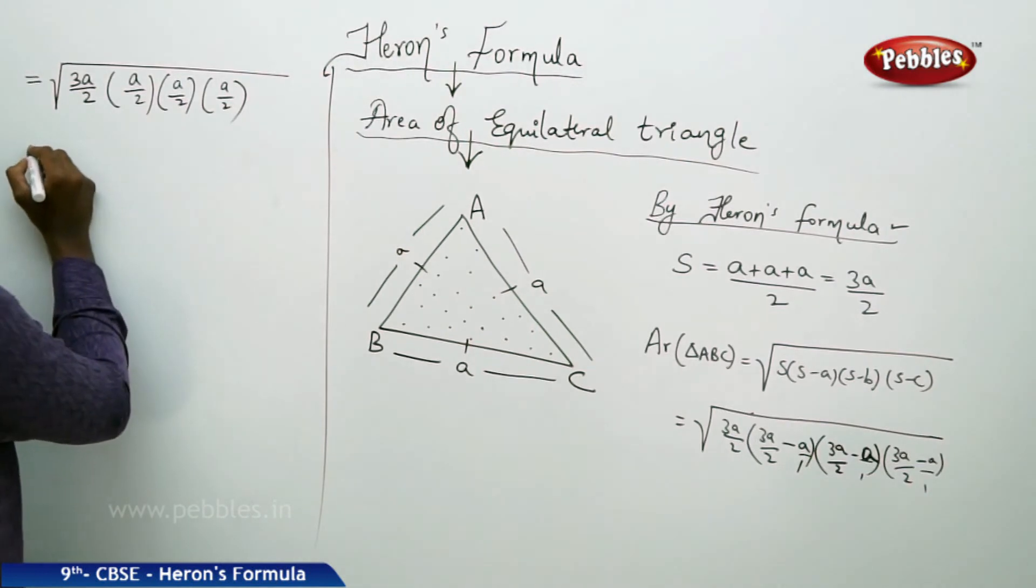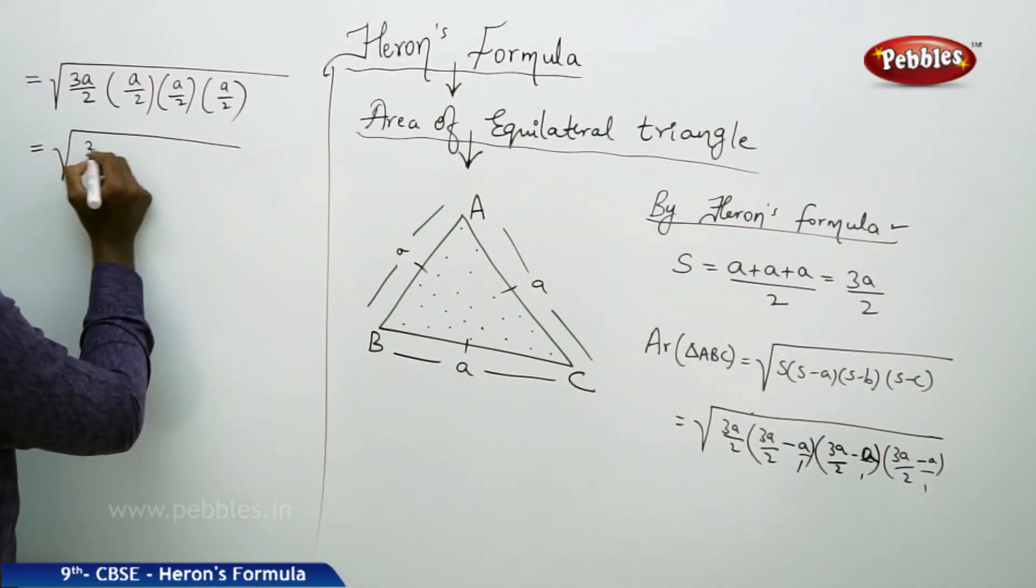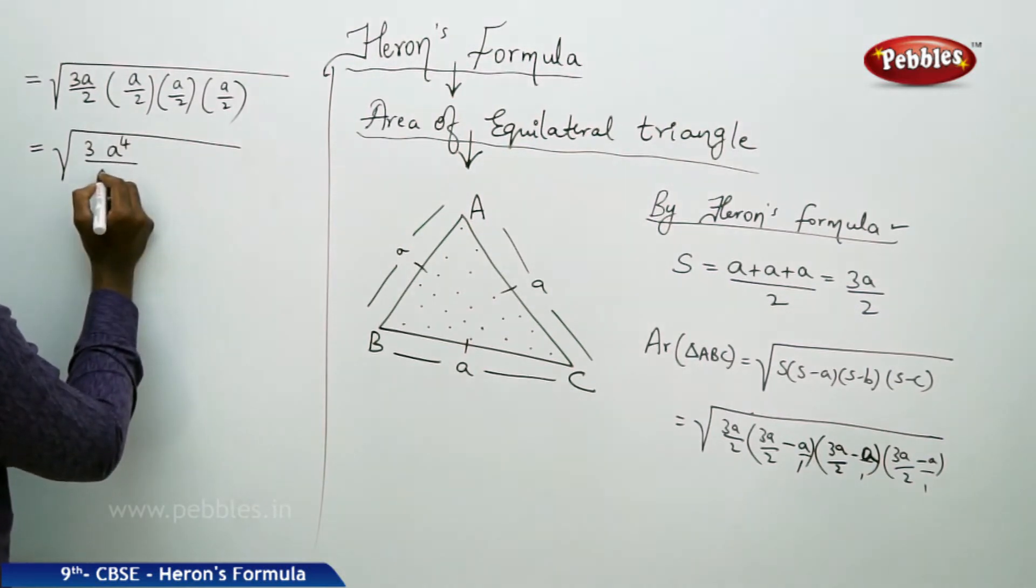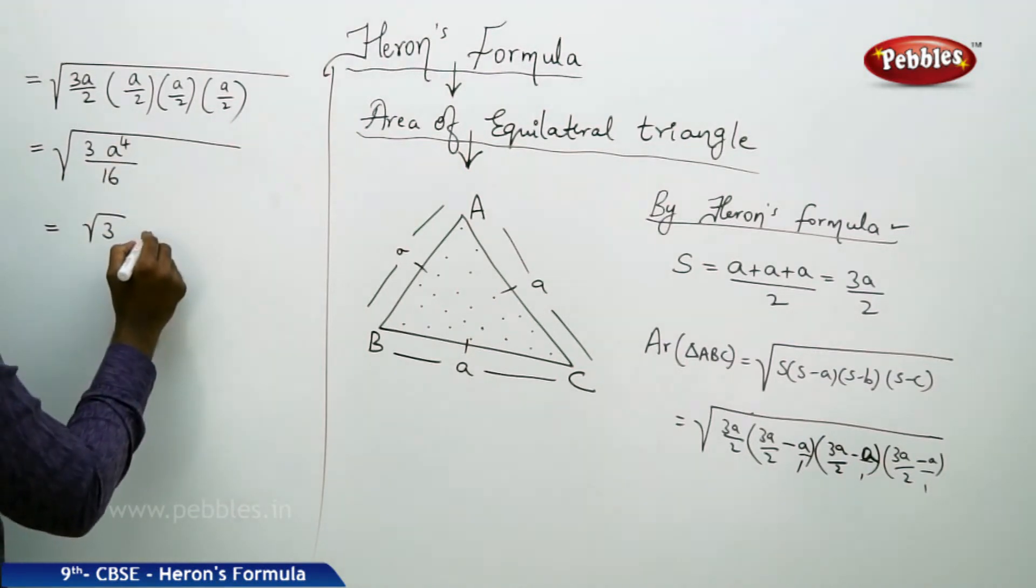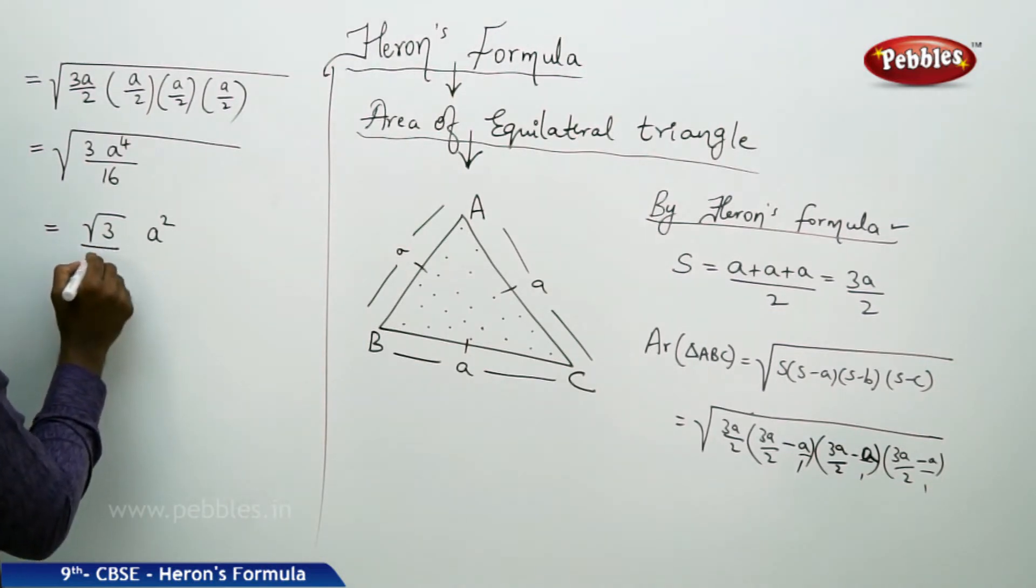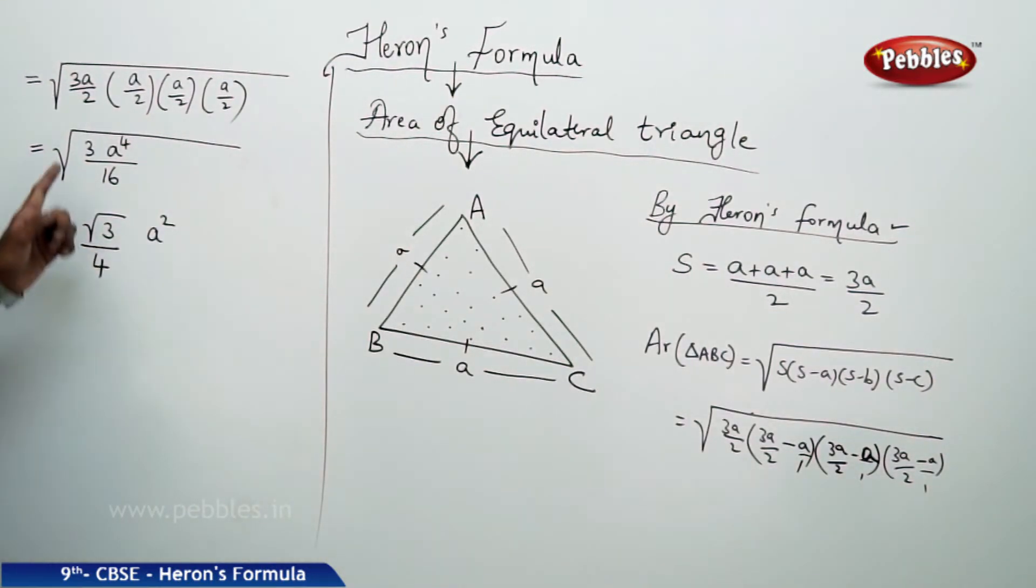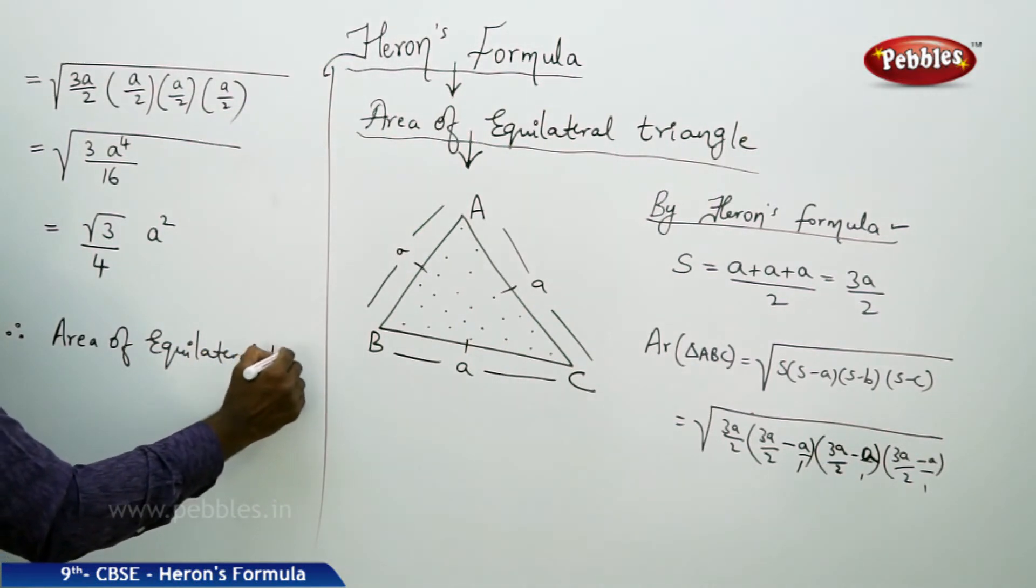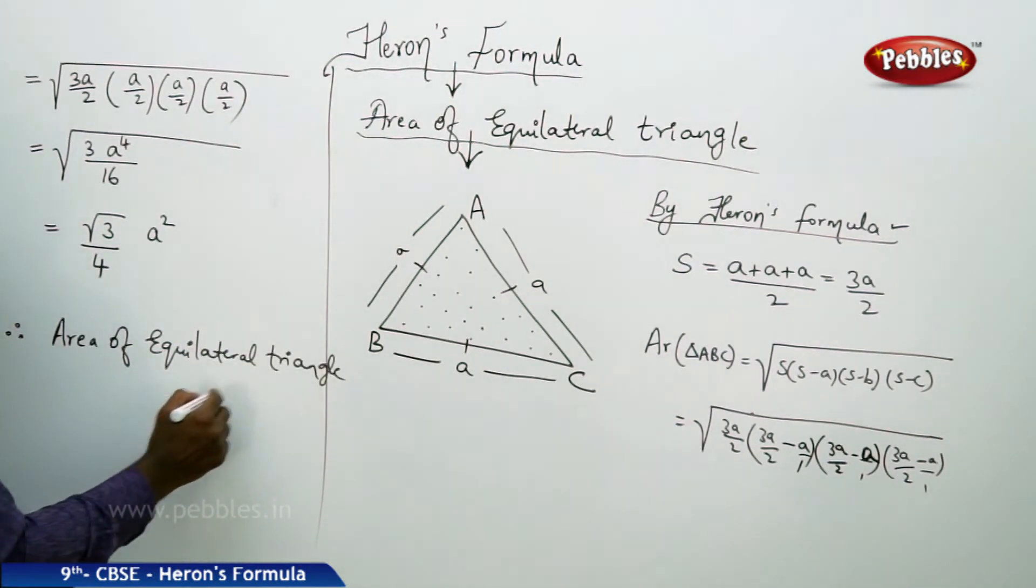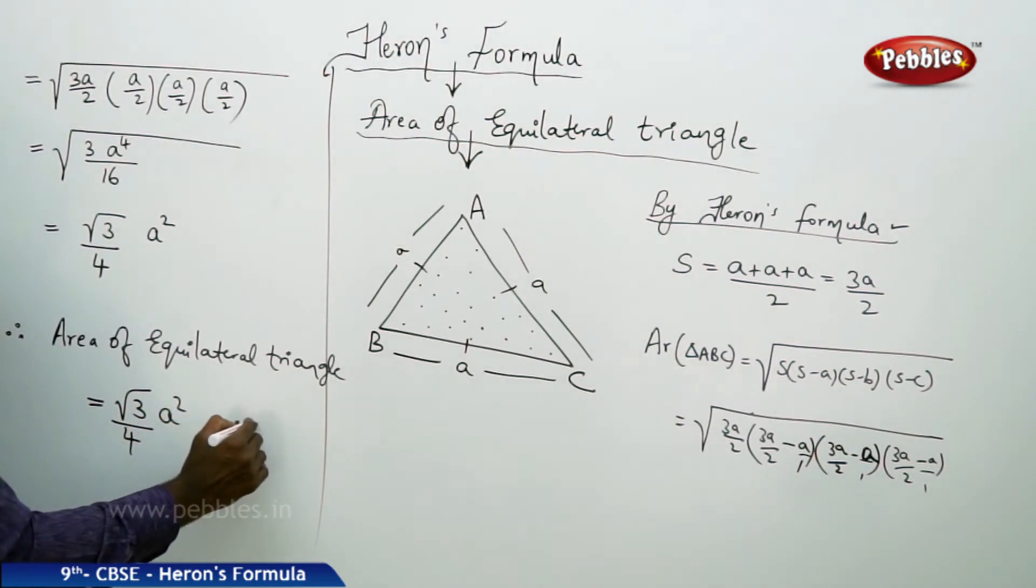Now this on further multiplication gives 3A power 4 by 16. Now this is root 3, root A power 4 is A square and root 16 is 4. So therefore I get this as root 3 by 4 A square. Therefore, area of equilateral triangle is always given by the specific formula, root 3 by 4 A square unit square.